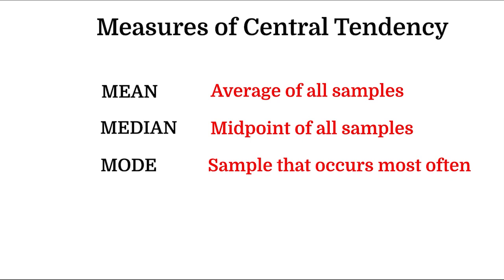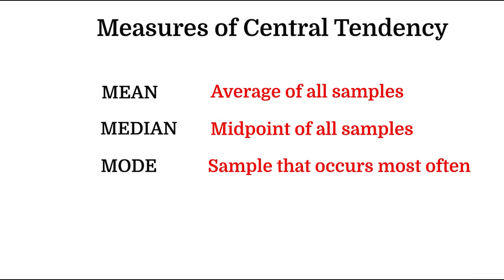The main aspects of descriptive statistics are some measures of central tendency, such as mean, median, and mode. We are going to talk about all these measures of central tendency, as well as some measures of dispersion like standard deviation and variance. But we need to understand our data first before using those measures.